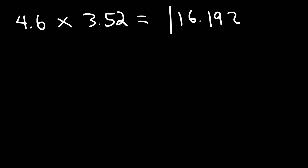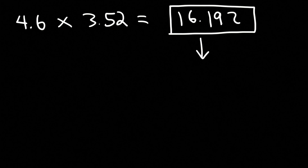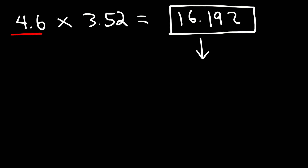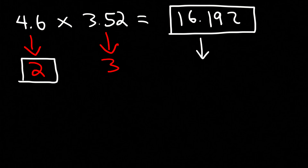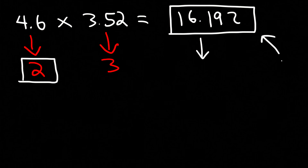When multiplying or dividing, round your final answer to the least number of significant figures among the numbers used. The first number, 4.6, has two significant figures. The second number, 3.52, has three significant figures. So we need to round our answer to two significant figures.